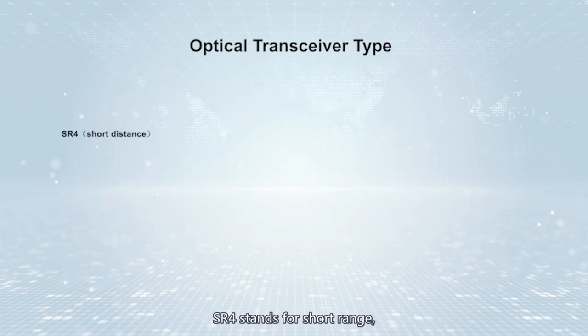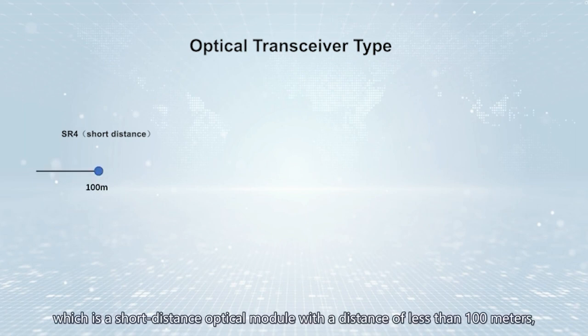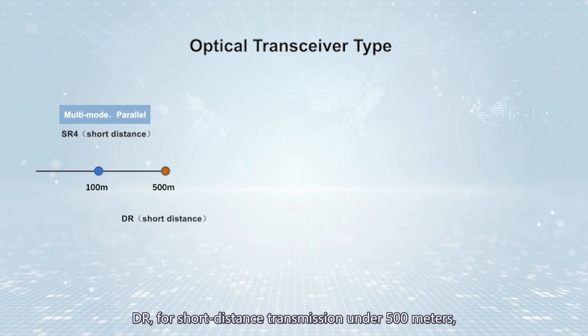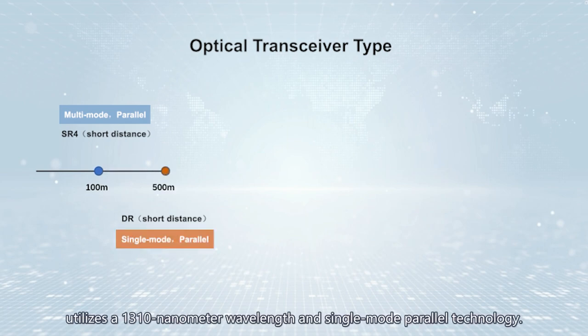SR4 stands for short-range, which is a short-distance optical module with a distance of less than 100 meters, using multi-mode parallel technology. DR, for short-distance transmission under 500 meters, utilizes a 1310 nanometer wavelength and single-mode parallel technology.